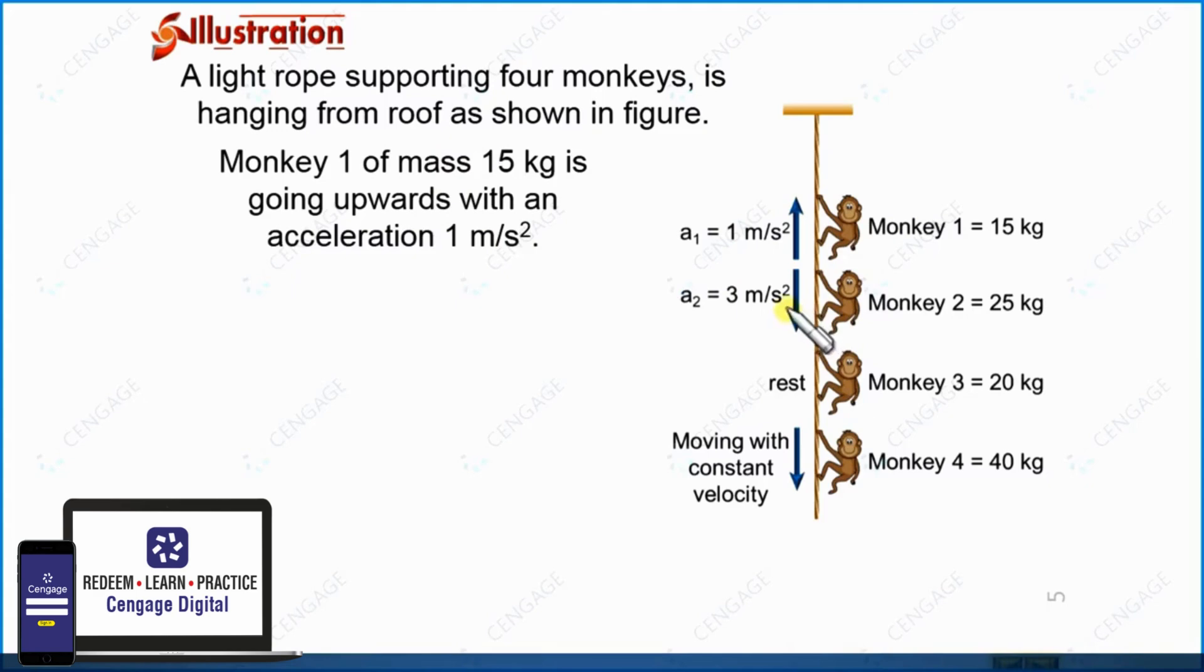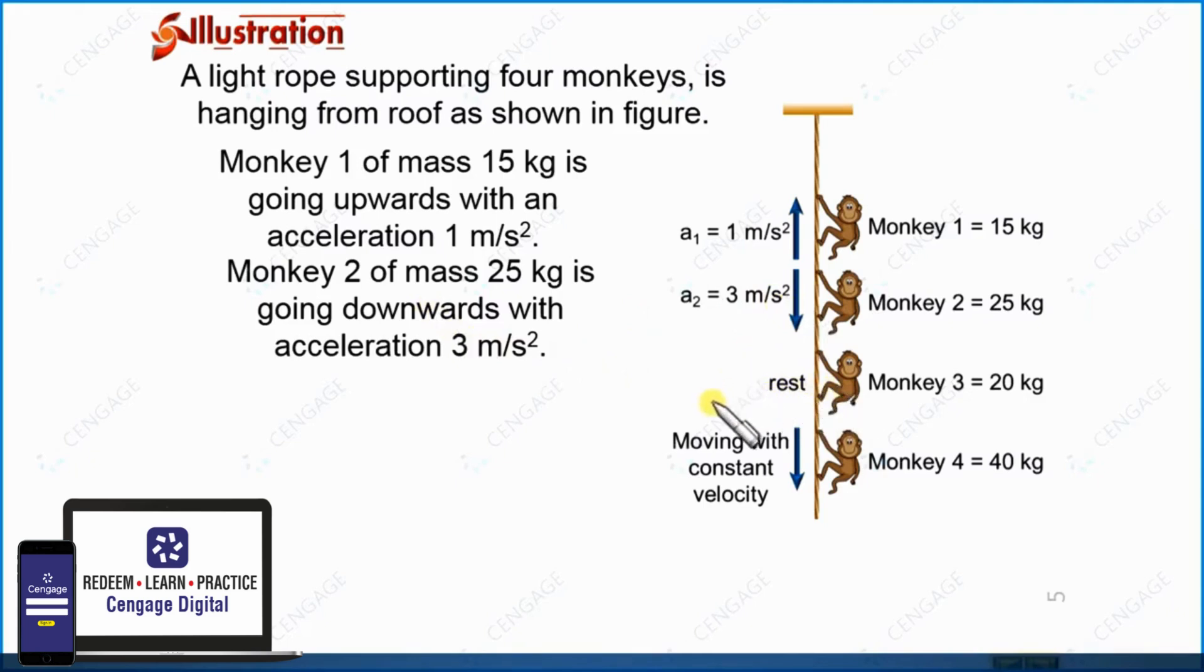The accelerations of the monkeys are given: monkey 1 upward direction 1 meter per second square, monkey 2 downward direction 3 meter per second square, this monkey is at rest, and this monkey is moving in downward direction with constant velocity.